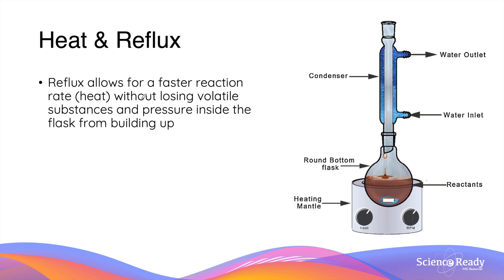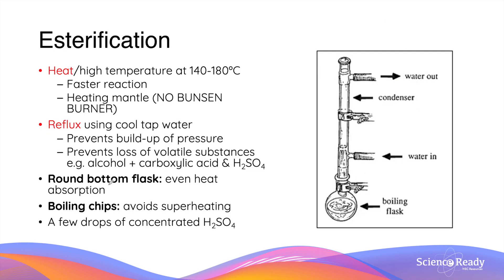In summary, reflux allows for a faster reaction through heating, without losing volatile substances and without the pressure inside the flask building up. This is a very critical reaction condition that we always implement when producing esters from alcohol and carboxylic acid. Besides heat and reflux, esterification is usually performed using a round-bottom flask, which allows heat to be absorbed more evenly within the reaction mixture.